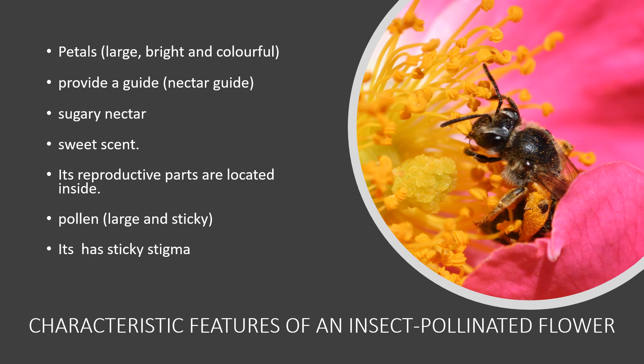The reproductive parts — the stamen and the carpel — must be located inside the flower, enclosed within its petals. Its pollen must be large compared to that of the wind-pollinated flower, and it should be sticky.